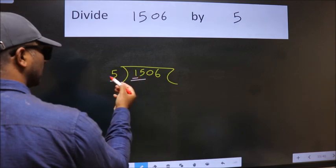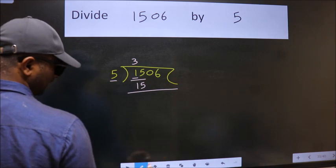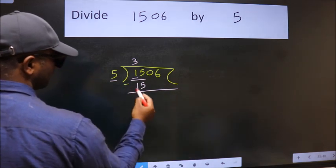When do we get 15 in 5 table? 5 times 3 is 15. Now, we should subtract. We get 0.